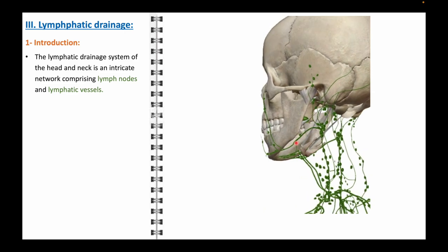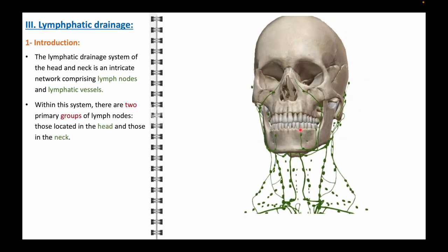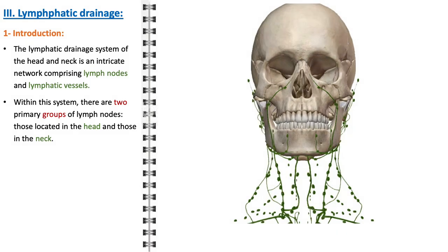The lymphatic drainage system of the head and neck forms a complex and essential network that includes lymph nodes and lymphatic vessels. This system plays a pivotal role in immune function and fluid balance within these regions. Within this intricate network, lymph nodes are organized into two primary groups: those located in the head and those in the neck. Each group is responsible for filtering lymphatic fluid from specific areas and facilitating immune responses. In the head, lymph nodes are strategically positioned around areas such as the ears, cheeks, and under the jaw, receiving lymphatic fluid from the scalp, face, and deeper cranial structures.